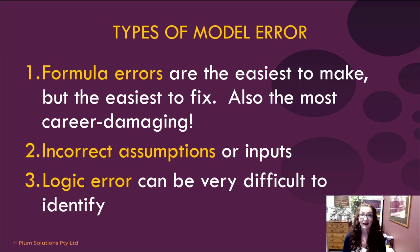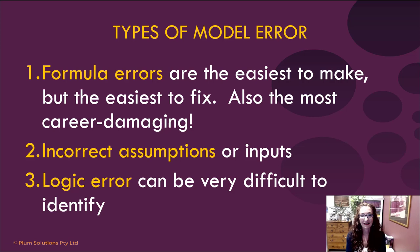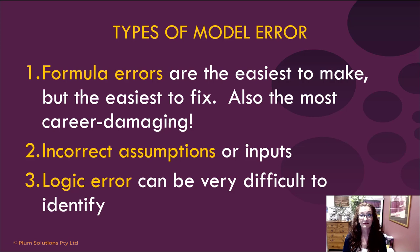Here are the most common types of model errors. What we're going to talk about today is how to reduce the possibility of this happening. For formula errors — number one — these are the most career-damaging mistakes to make. If you submit a model to your boss and they look at it and say 'that formula doesn't look right,' that is probably one of the worst things that can happen to a modeler. We make formula mistakes all the time, but there are techniques you can use to reduce the possibility of that happening.